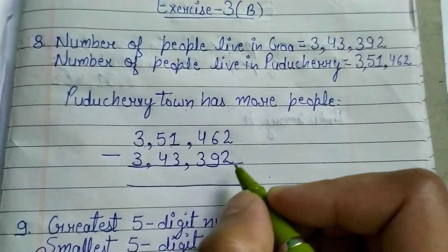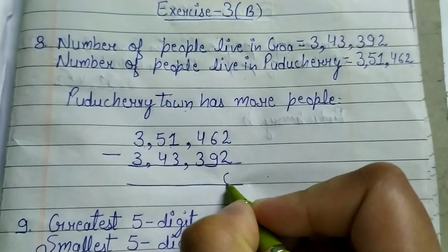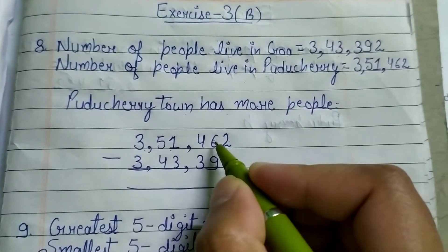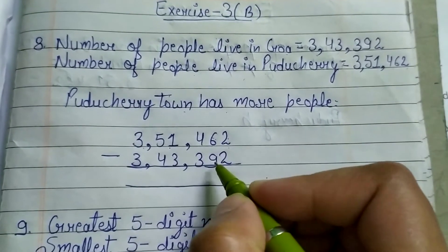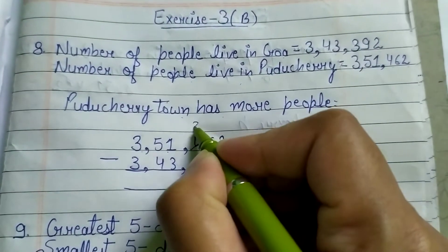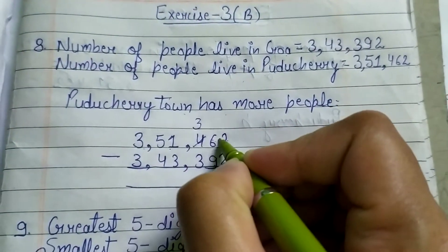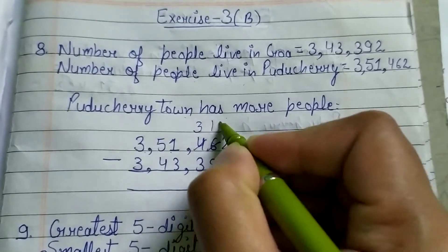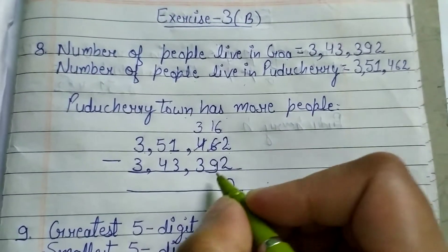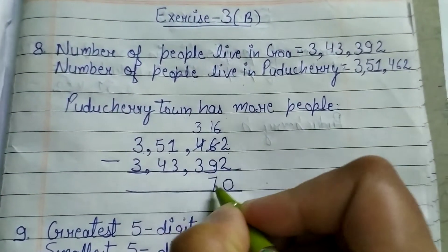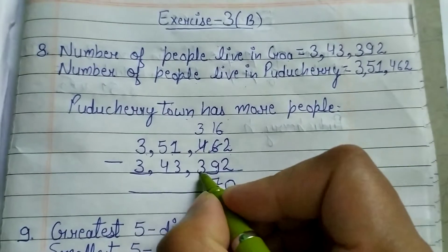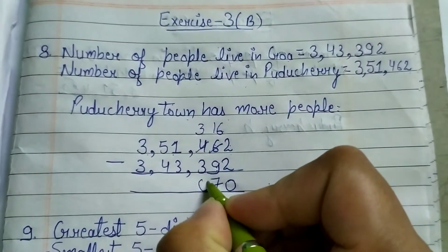2 minus 2 is 0. 6 minus 9 — 6 is a small digit as compared to 9, so we borrow from the next digit (4 se borro leenghe). 3, 16. 16 minus 9 is 7. 3 minus 3 is 0.